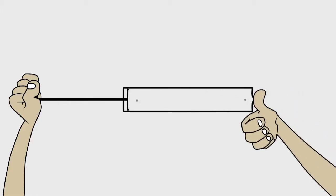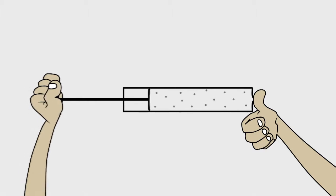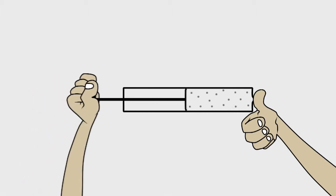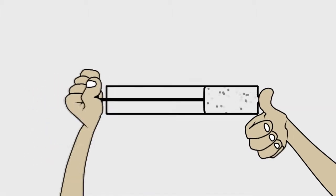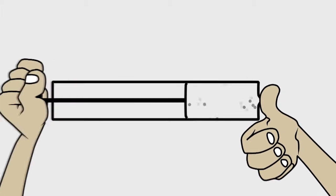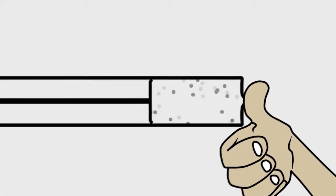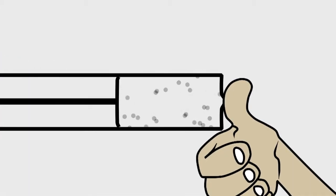Cover the outlet of a bike pump with your thumb and push down on the handle. As the volume inside decreases, you'll feel the pressure increase. That's because the air molecules have less space to move around in, and as they jostle around in the confined space, they collide more frequently with your thumb.